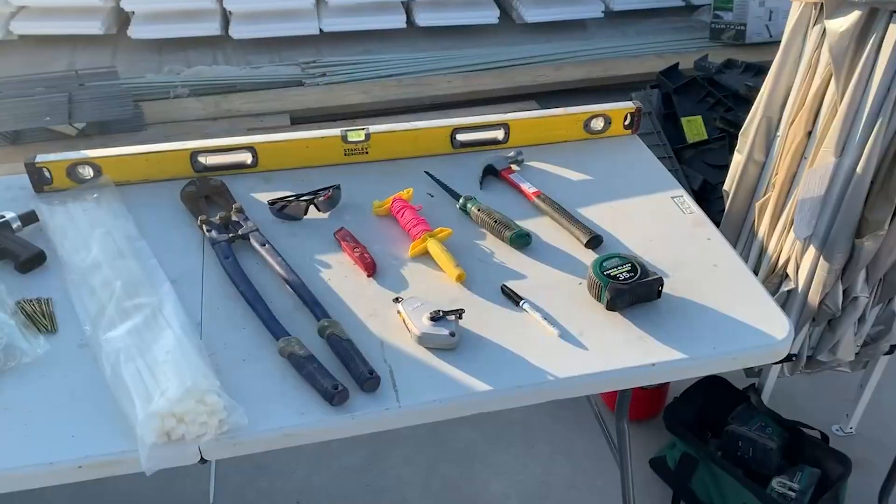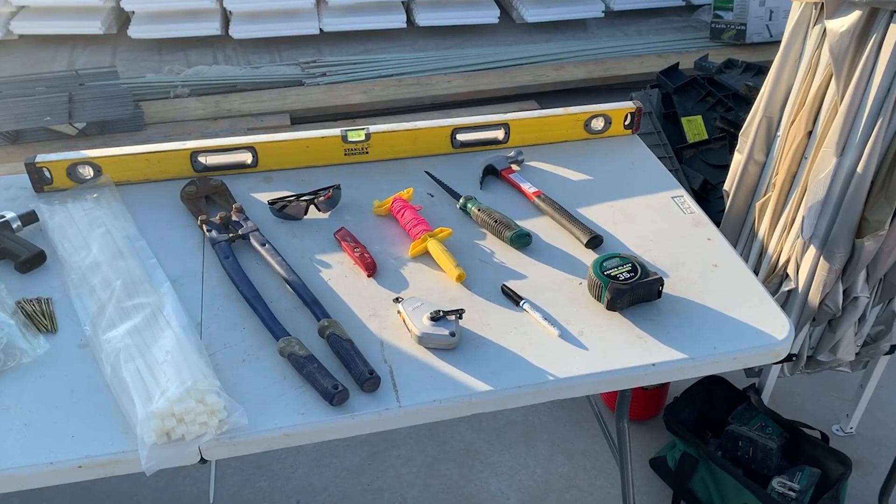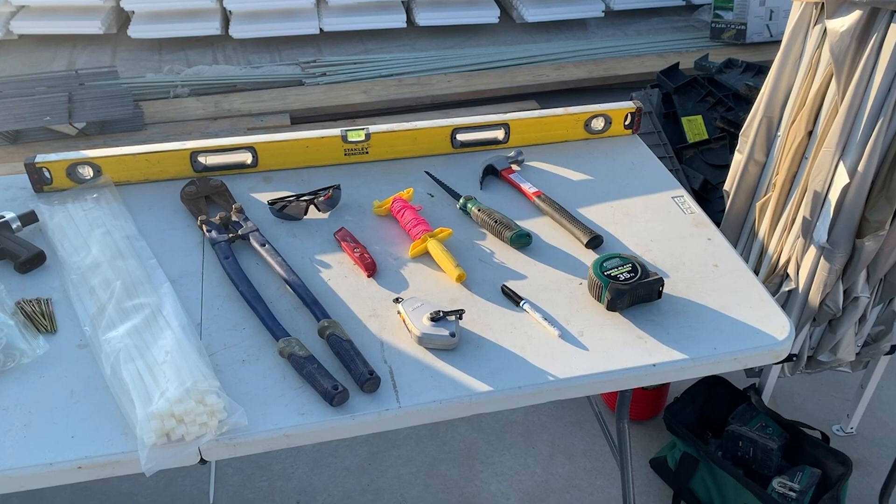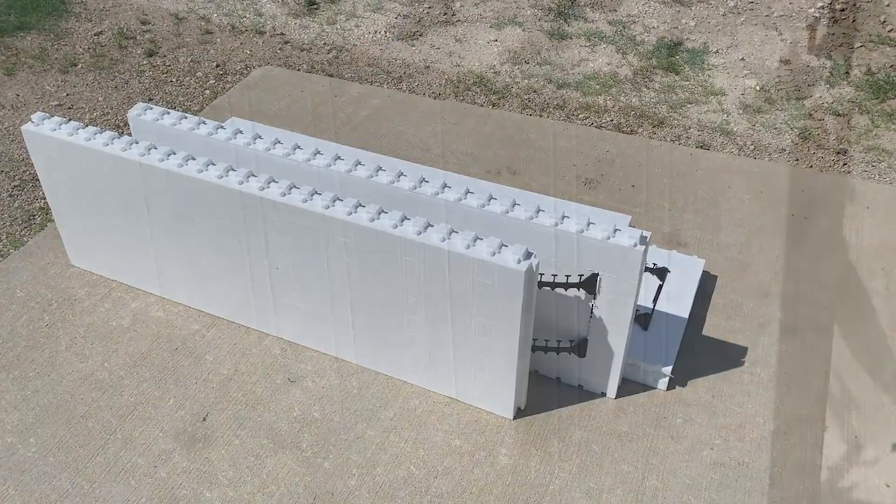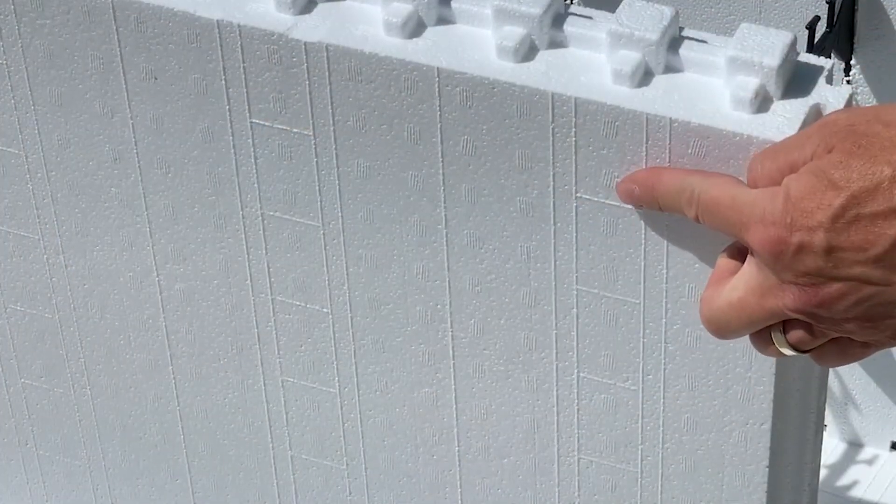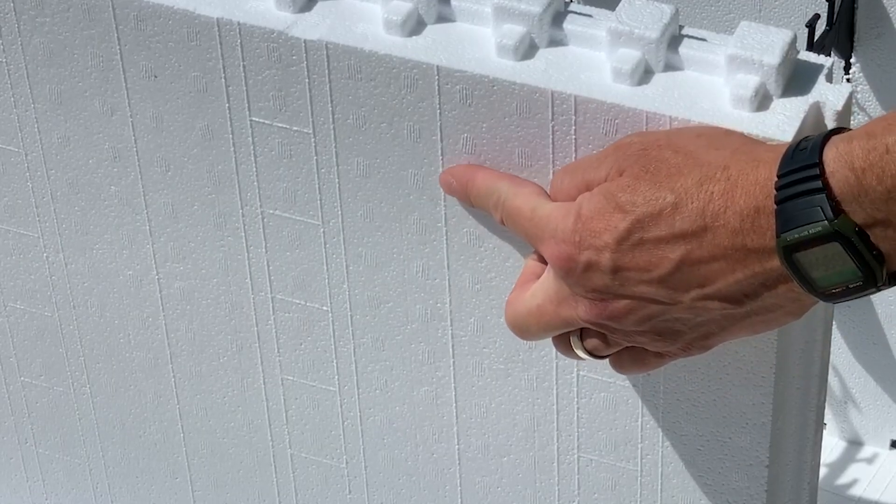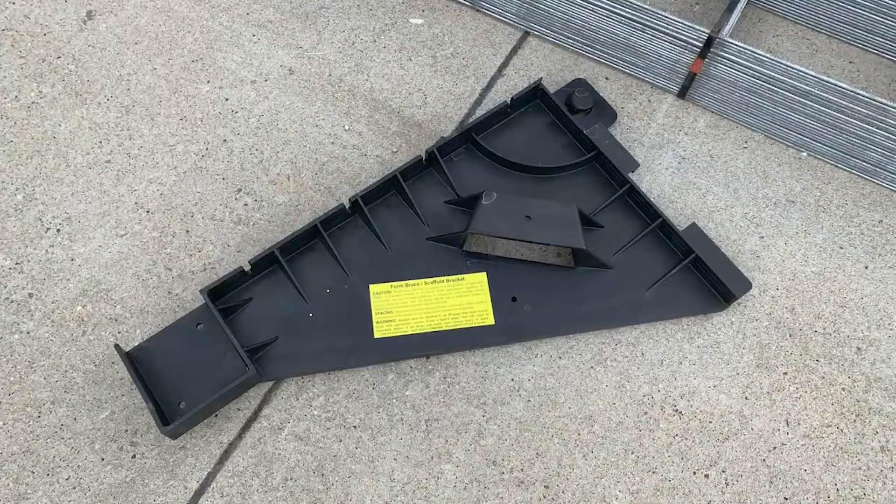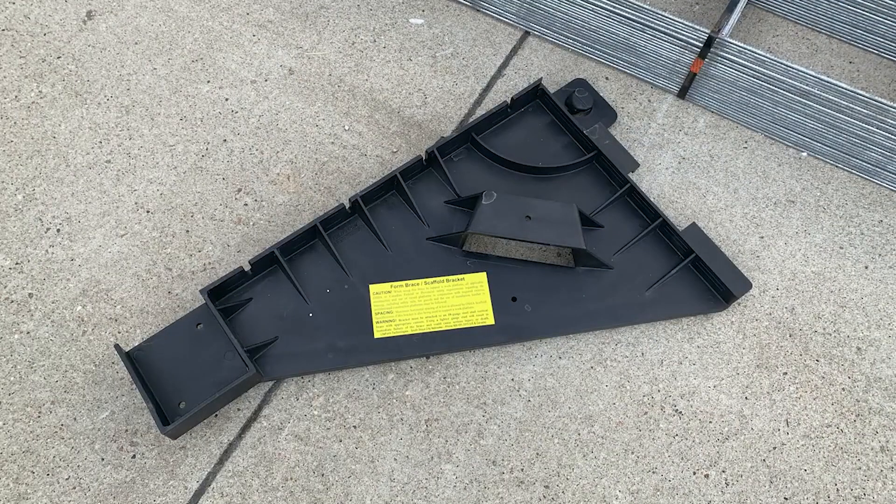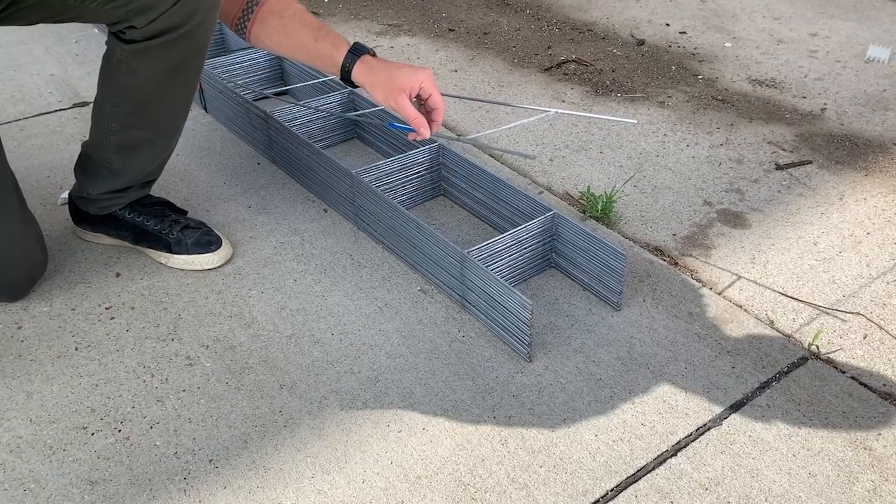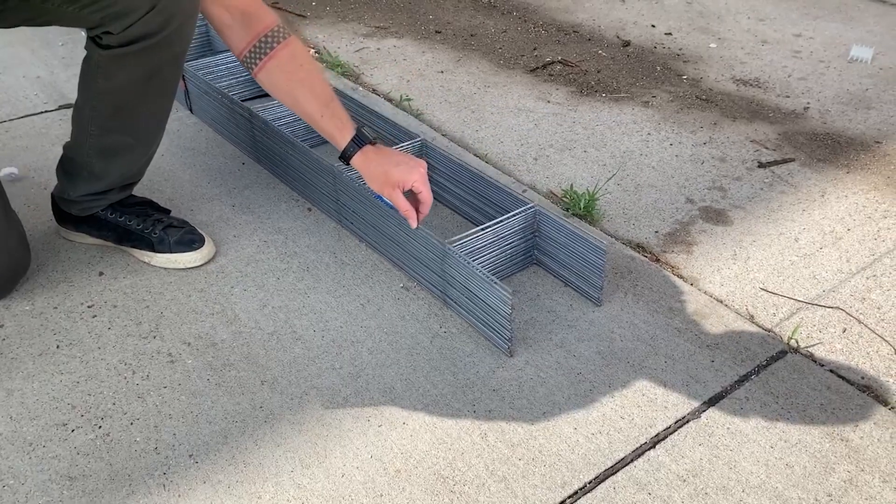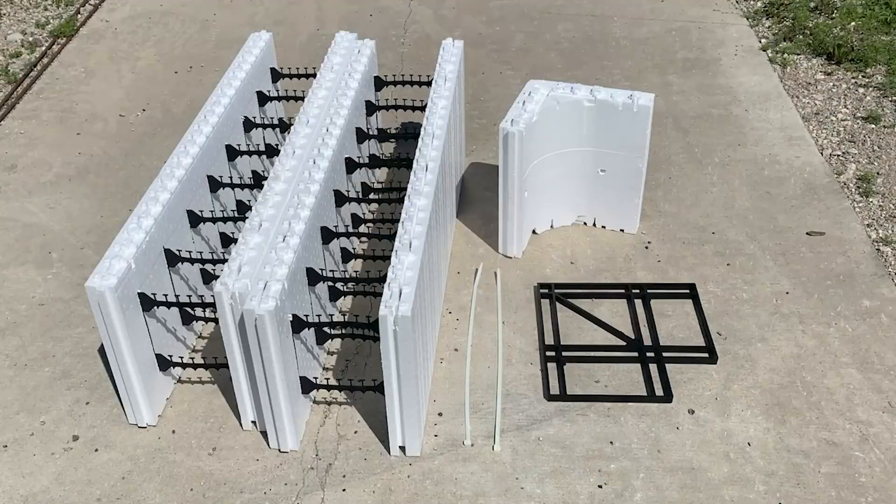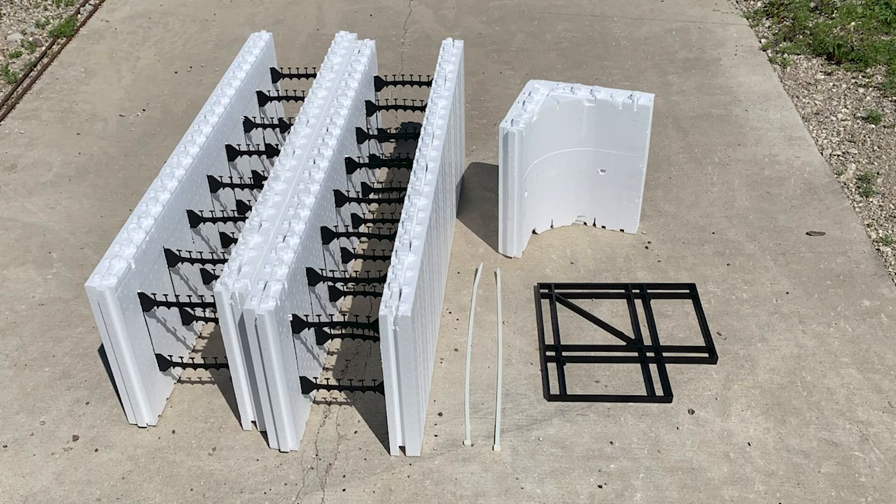The foam blocks used in Lightform ICF are made from expanded polystyrene, which is a lightweight, durable, and highly insulating material. The foam blocks are designed to interlock with each other, creating a tight and secure seal that eliminates air leaks and reduces energy loss. The Lightform ICF system offers several benefits over traditional building methods. First, it provides superior insulation, which helps reduce energy costs and increase the overall efficiency of the building.